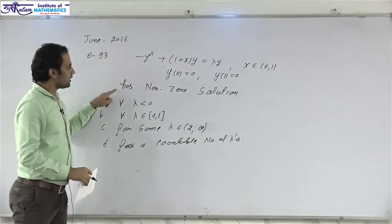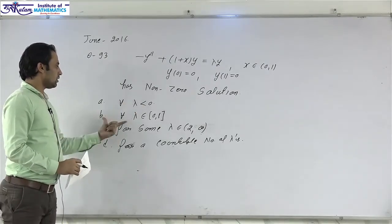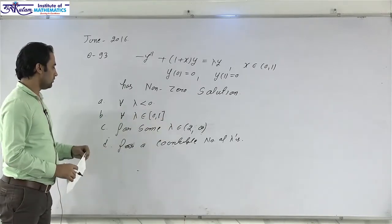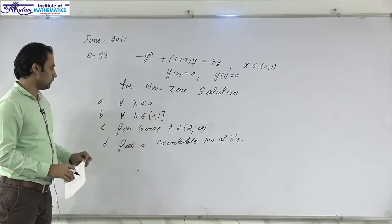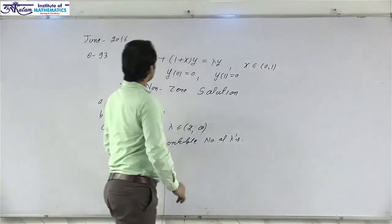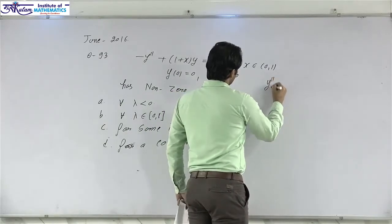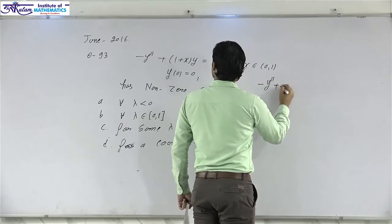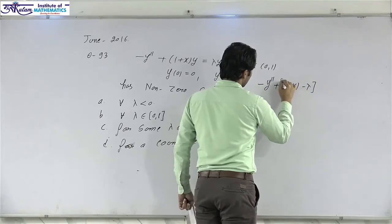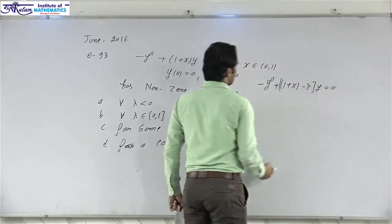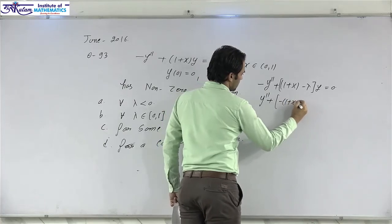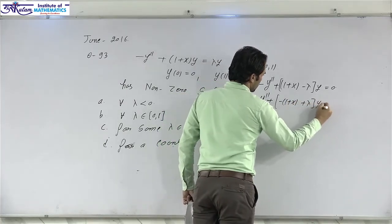We can rewrite this differential equation as y double dash plus (minus(1 + x) + lambda) times y equals 0, or further as y double dash + (lambda − 1 − x) times y equals 0.